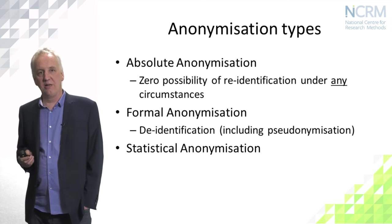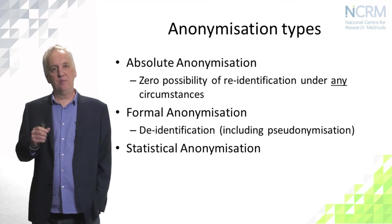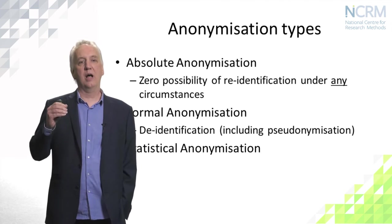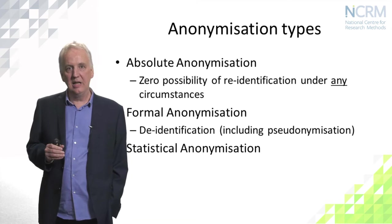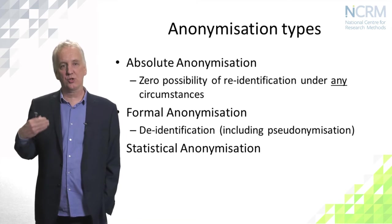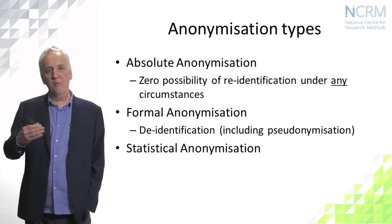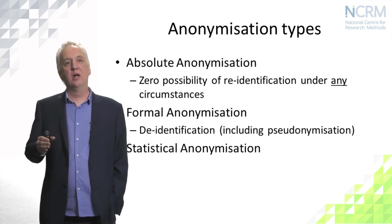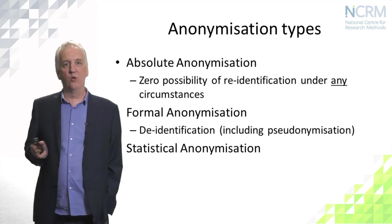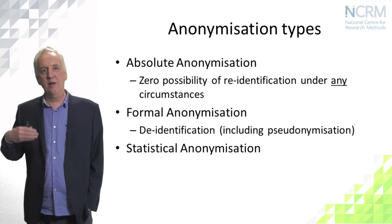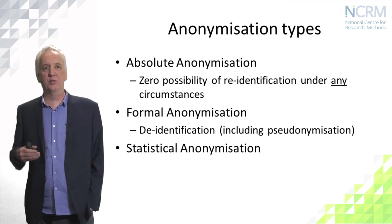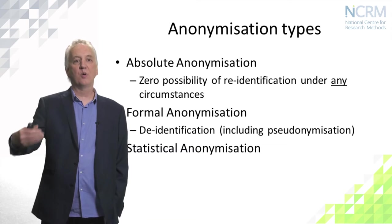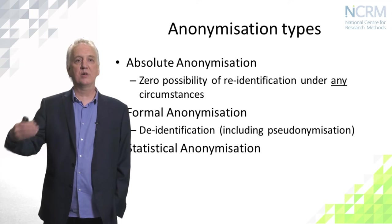Statistical anonymisation attempts to measure the risk of an identification happening and to control that risk. Here we're in this middle ground between the two extremes of absolute and formal anonymisation, allowing the possibility that a re-identification could occur and measuring the risk of it.